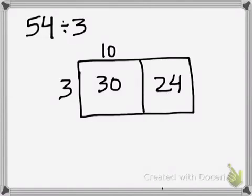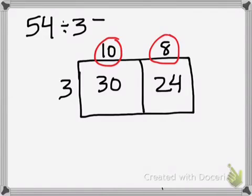Just like the other way of using distributive property, I have my two parts of my answer. In this case, they are 10 and 8, so I know when I add up 10 and 8, I'll get my final quotient, 18, my final answer for this problem.